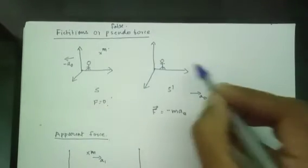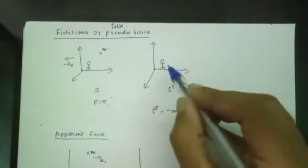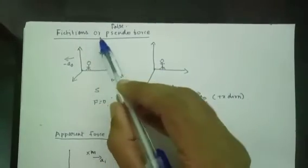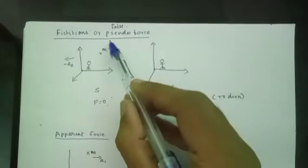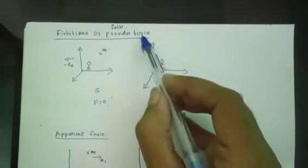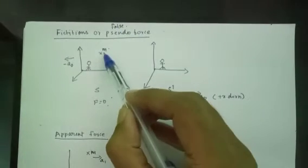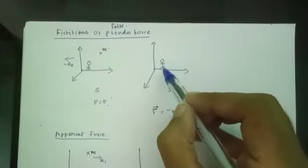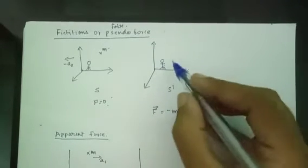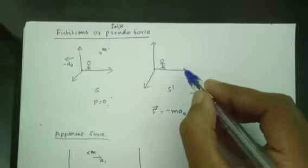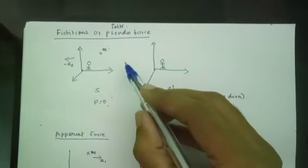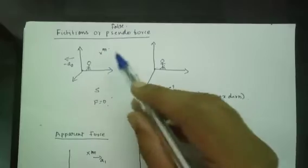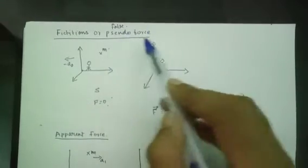It is a feeling of motion — it is a fictitious or pseudo force. It is a false force. Actually, this object is not moving, but due to the motion of the observer in this frame, this particular object appears to be moving. So it is called pseudo force.